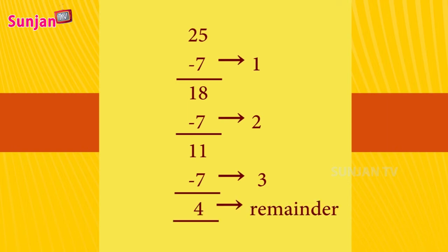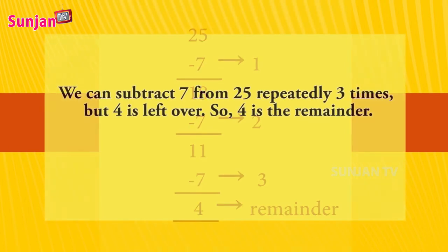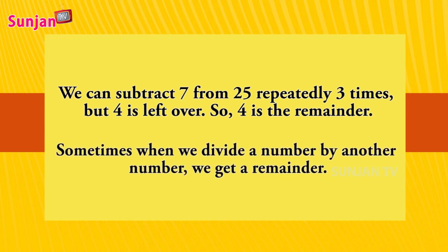We can subtract 7 from 25 repeatedly three times, but 4 is left over, so 4 is the remainder. Sometimes when we divide a number by another number, we get a remainder.